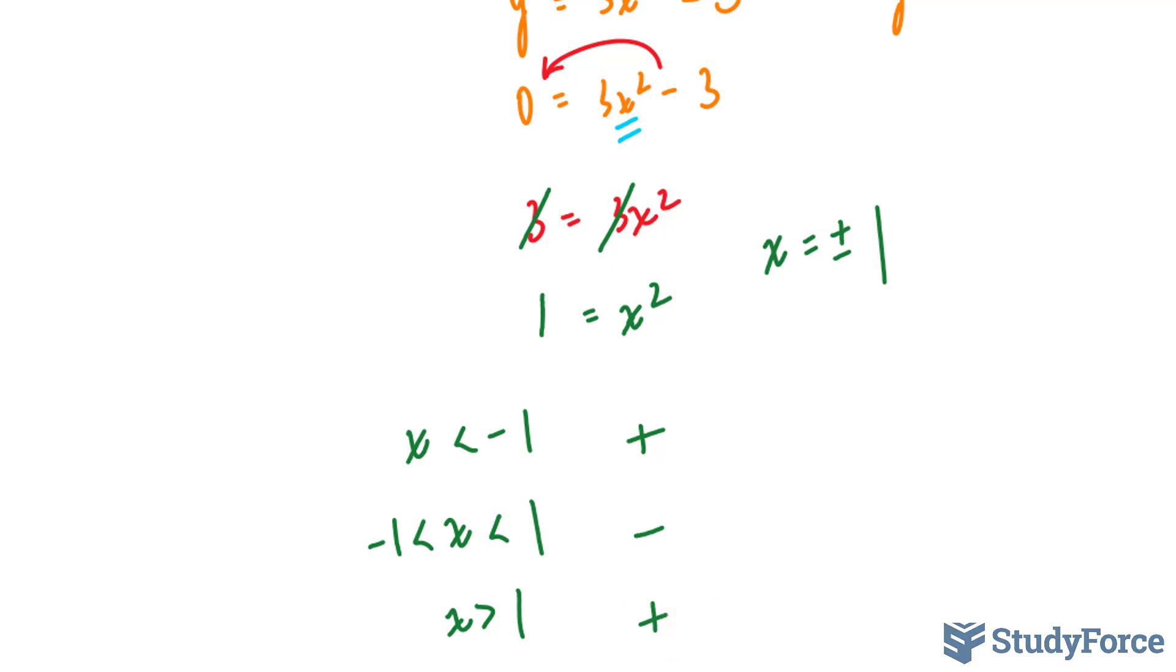Now what does this mean? The reason why we do this test is because if the output of y prime changes from negative to positive, then y has a minimum at that stationary point. Similarly, if y prime changes from positive to negative, y has a maximum at that stationary point.